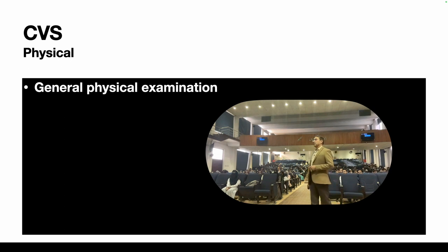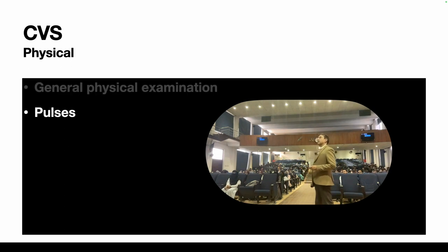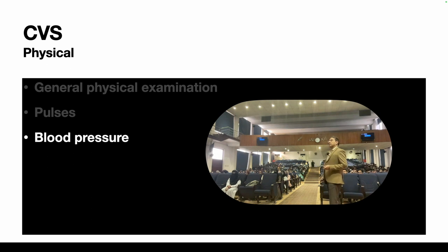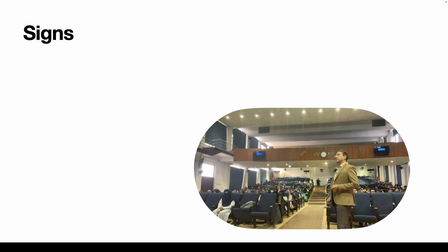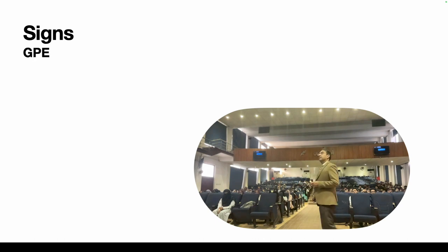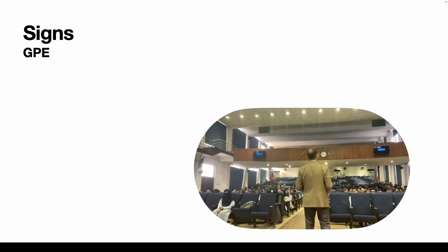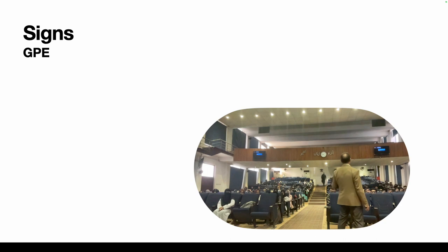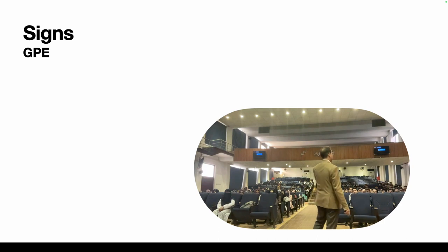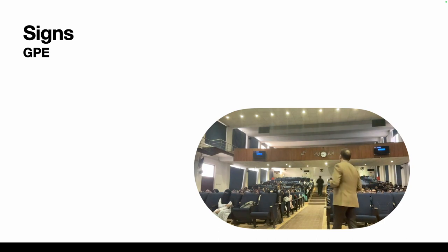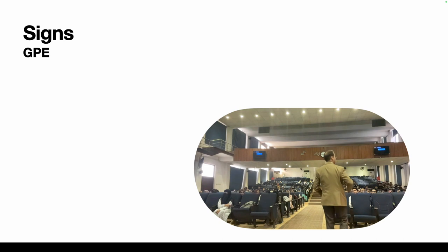In cardiovascular physical examination, you perform general physical examination and examine pulses, blood pressure, the neck, and the precordium. Always start from one end with a structured approach — begin from the hand or foot and proceed systematically. Have a plan in mind for what you are going to see and how you will describe it.